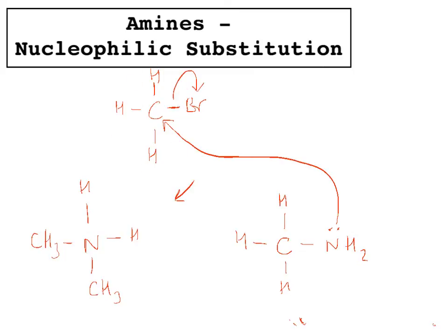That nitrogen is again making more bonds than it wants to, so it's positively charged. In order for that positive charge to disappear, it's quenched — the hydrogen leaves — and we end up with our secondary amine: CH3 attached to an N, which is attached to another CH3 and one H.